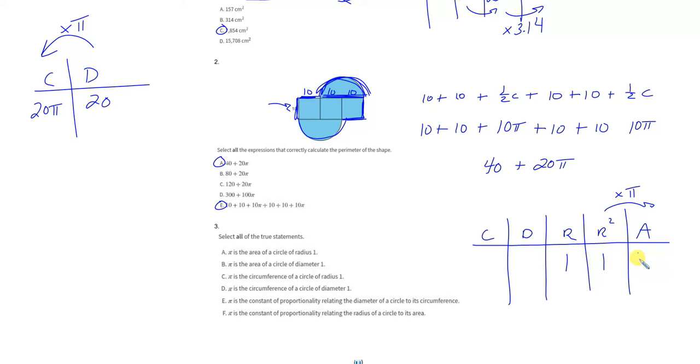Well, one times pi is one pi, or just pi. So that's true. Pi is the area when the radius is one. I agree with that.